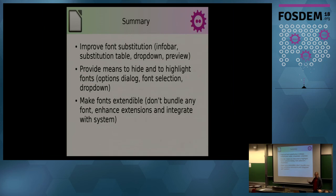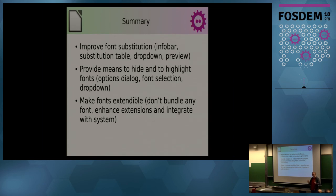To summarize: we need improvements to font substitution — an info bar, more accessible substitution table, improvements to the dropdown with preview, which is what users really want. We need ways to hide and highlight fonts — hide unused ones, highlight favorites — going into the options dialogue and the font selection dropdown. All of this needs to be reworked. And lastly, the font extension feature means we don't need to ship fonts ourselves. That's all, thank you.